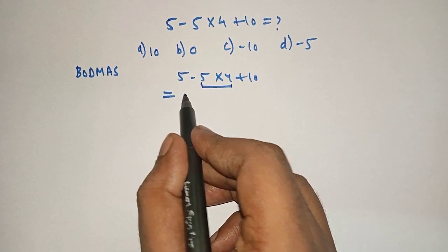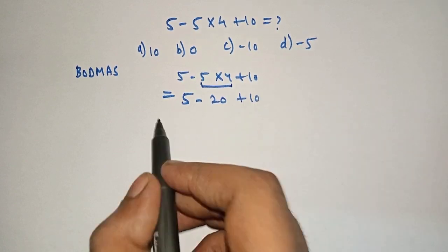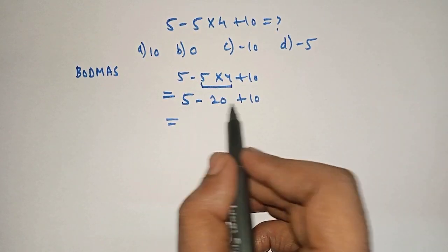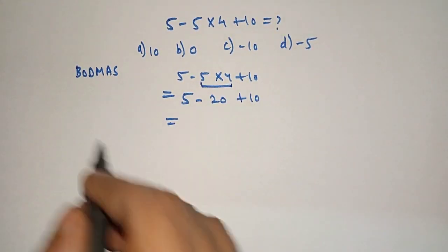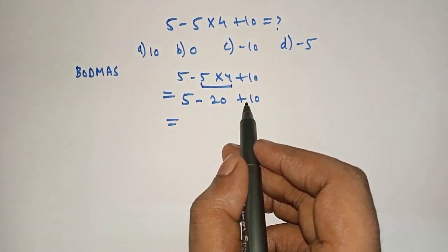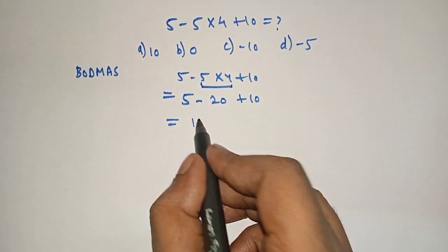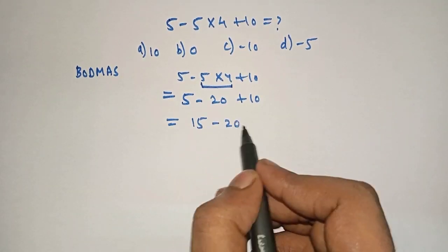We will write 5 minus 5 into 4 is 20 plus 10. Now here minus and plus is there in equation. Therefore which will come first? Addition. Therefore we will add this. 10 plus 5 is 15 minus 20.